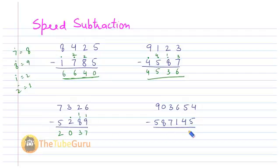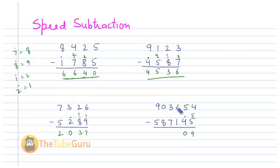Why don't you pause the video and try to solve this next problem yourself? Here I have four minus five — not possible, so I take the complement of five, which is five, and put a dot here. Five plus four is nine. Next, five minus five is zero. Six minus one is five. Three minus seven is not possible, so complement of seven is three, and three plus three is six.